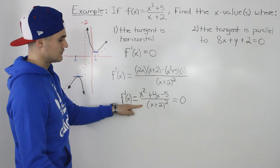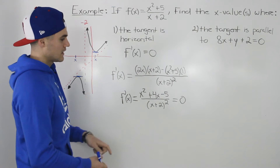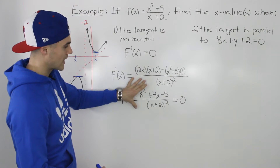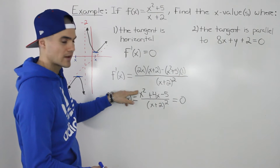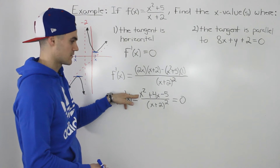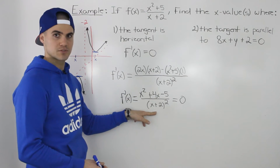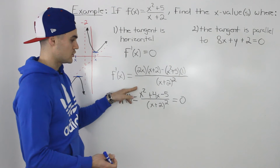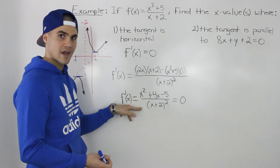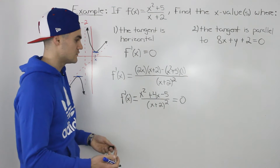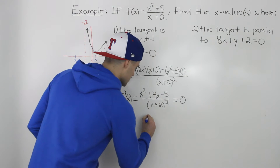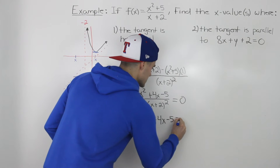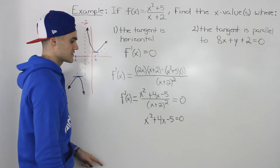Because the derivative is a rational function, if you remember from advanced functions, a rational function equals 0 when the numerator is equal to 0. Whenever the denominator equals 0, the function is undefined. But if the numerator is equal to 0, zero divided by a number always gives you 0. So all we have to solve is when x squared plus 4x minus 5 equals 0.